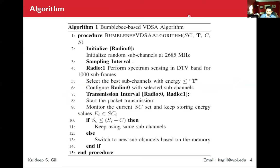This is the pseudocode for our bumblebee-based VDSA algorithm. SC is the subcarrier list, T is the threshold, C is the switching cost. I'm going to explain about switching cost more in detail further. And S is the current subcarrier energy level, subcarrier list energy level.